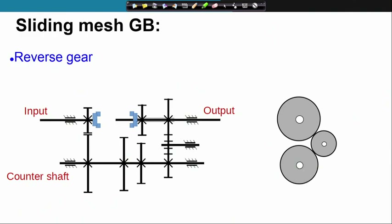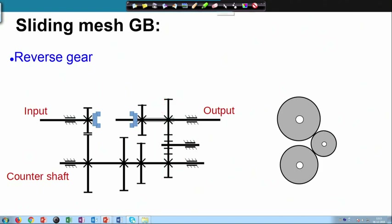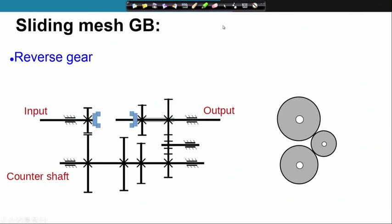When you push the sliding arrangement to the extreme right, you have three gears in mesh with this as the intermediate gear. Because of this intermediate gear, the direction of rotation is changed at the output — this is the reverse gear. This is the sliding mesh gear box.